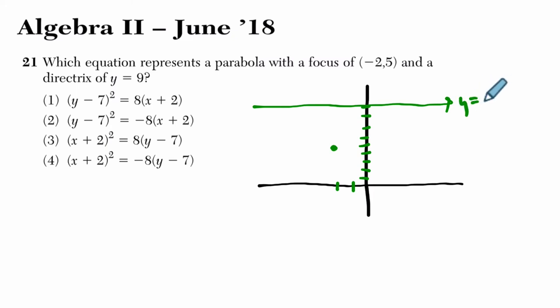So y = 9, and then this is (-2, 5). So the vertex is going to be halfway between 5 and 9. You can count or add them and average them. So 5 plus 9 is 14, divided by 2 is 7.